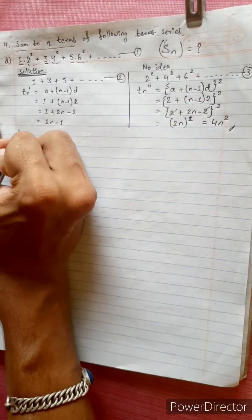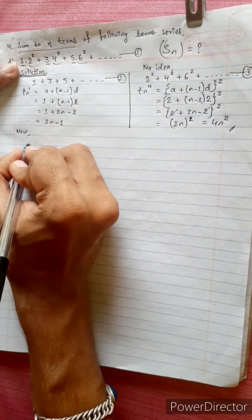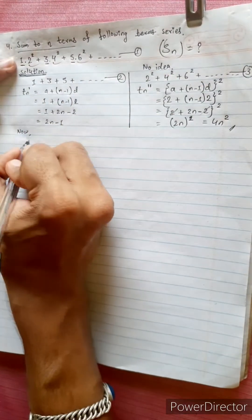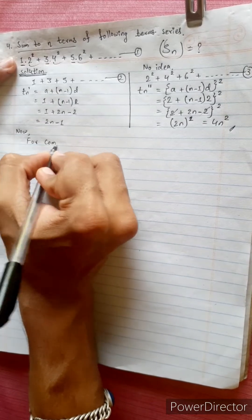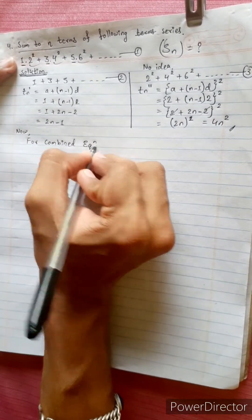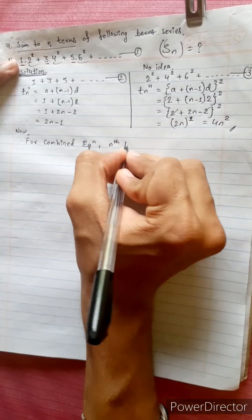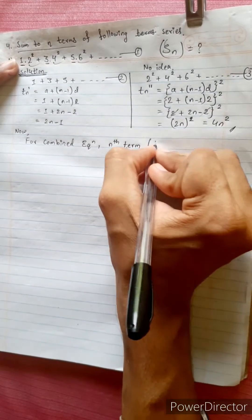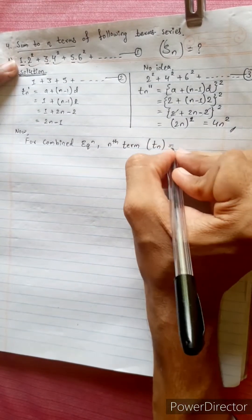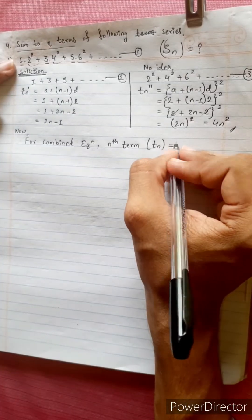Now, for combined equations, we find its nth term. The nth term Tn equals to Tn equals to...